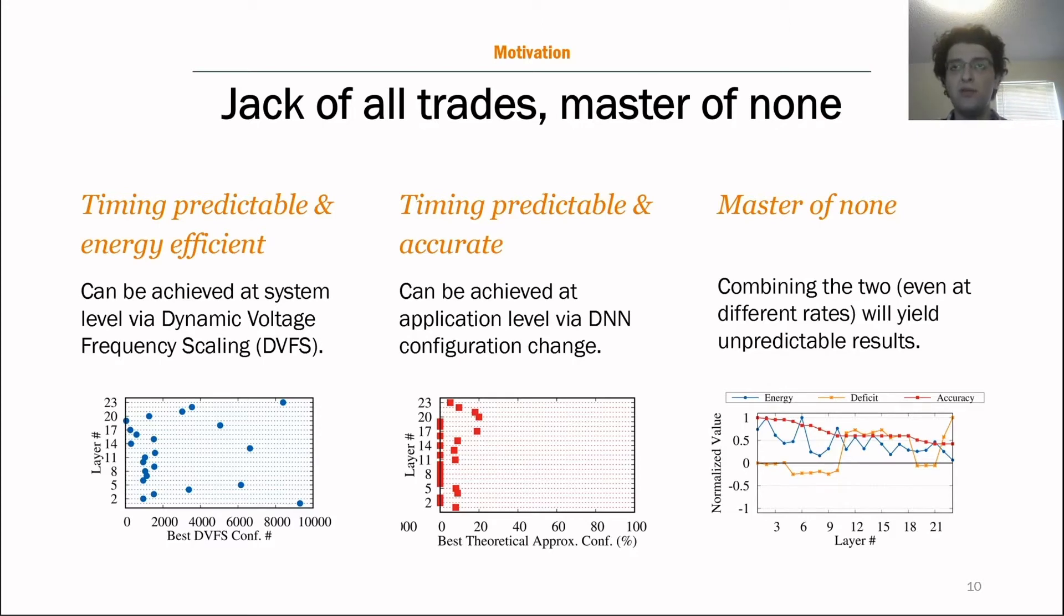So AlexNet can easily reach the 20 millisecond deadline by some DVFS adjustments. It doesn't need any accuracy adjustments. However, as you can see in our experiment, both the energy and accuracy keep decreasing at the same rate. Initially, the deficit is almost zero, but still negative. In an attempt to reduce this deficit, the negative deficit means the system is behind the ideal schedule and is likely going to miss the 20 millisecond deadline. Both the system level solution and the application level solution switch to a lower configuration. You can see around layer 4 that happens, and then continues and their search continues all the way around layer 10.